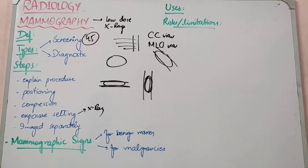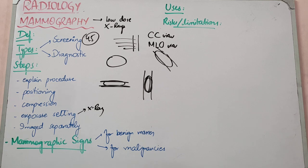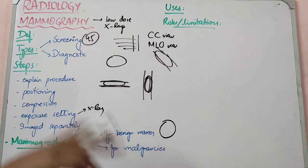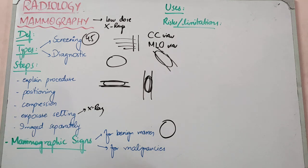When reading mammography, you need to tell whether a mass is benign or malignant. A benign mass typically has round, smooth, well-defined borders. Malignant masses, on the other hand, tend to have diffuse, ill-defined margins. Size can vary, but the margin characteristics are the key distinguishing feature.